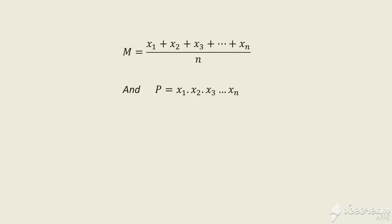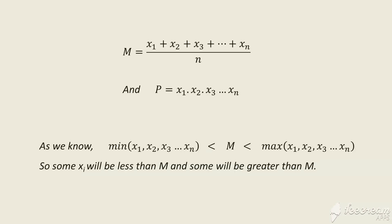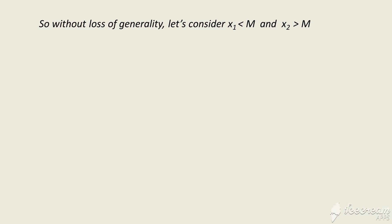As we know, the arithmetic mean lies somewhere between the numbers. So we can say there will be some numbers less than M and some numbers greater than M. Without loss of generality, we consider that x₁ will be less than M and x₂ will be greater than M.